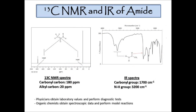From this we have the C-13 NMR and IR of our amides. In the C-13 spectra, the carbonyl compound shows up around 180 ppm, and the alkyl group comes up around 20 ppm — this is just acetamide, not much to it. With IR spectra, carbonyl groups show up around 1700 cm⁻¹, and the NH group shows up around 3300 cm⁻¹. Carbon-13 gives you specific values for all the carbons in the molecule, and IR is specific for the functional group. Just to correlate this: physicians obtain laboratory values and perform diagnostic tests to understand the patient and disease, and organic chemists obtain spectroscopic data and perform model reactions to better understand the chemistry.